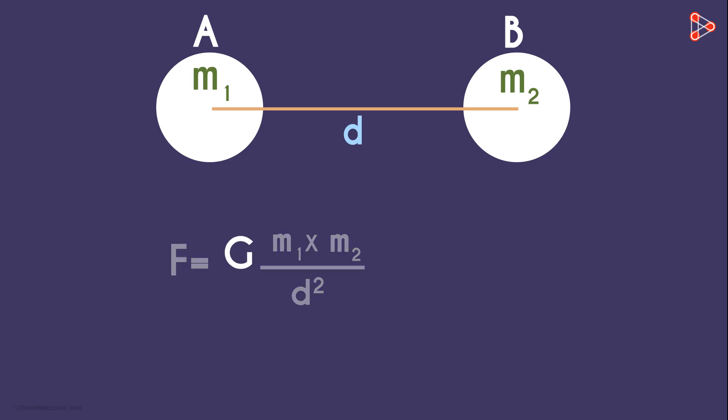Uppercase G here is called the Universal Gravitational Constant and its value is approximately equal to 6.673 times 10 raised to negative 11 Newton meters squared per kilogram squared.